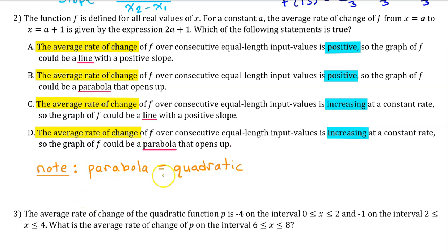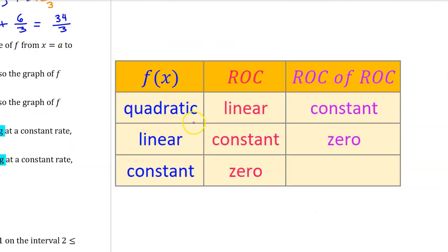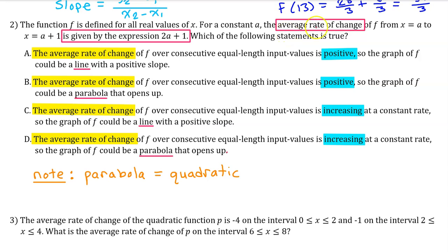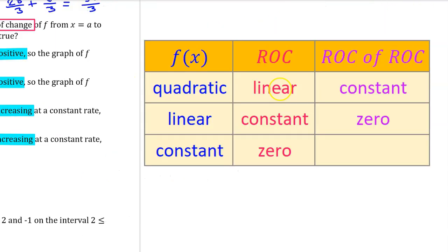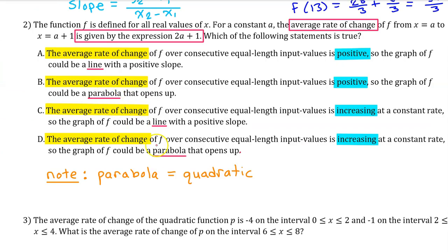Note: parabola equals quadratic. f of x will be quadratic if the average rate of change is linear, and f of x will be linear if the average rate of change is constant. In the setup, we are told that the average rate of change is given by the expression 2a plus 1, which is a linear expression — think mx plus b. So the average rate of change is linear, meaning f of x is quadratic, i.e., some kind of parabola. We've narrowed it down to either B or D.